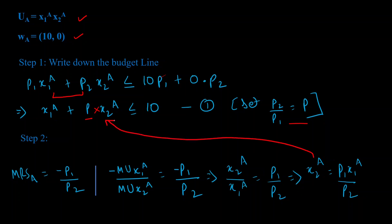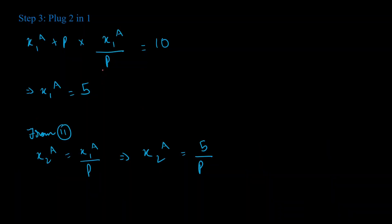Substituting x2a = p·x1a into the budget constraint x1a + p·x2a = 10: we get x1a + p·(x1a/p) = 10, so the p's cancel and 2·x1a = 10, giving x1a = 5. Plugging back in, x2a = x1a/p = 5/p. So A's demand functions are x1a = 5 and x2a = 5/p.